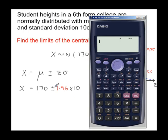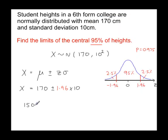Let's go to the calculator. Do the lower limit first, so do the minus first. 170 minus 1.96 times 10, so 150.4, 150.4 centimeters.